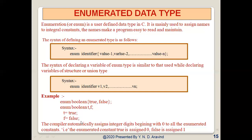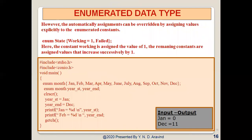The compiler automatically assigns integer digits beginning with zero to all enumerated constants. However, these automatic assignments can be overridden by assigning values explicitly. For example, in enum state { working=1, failed }, since working is assigned 1, the value of failed will be successively incremented by one, so failed will have the value 2.